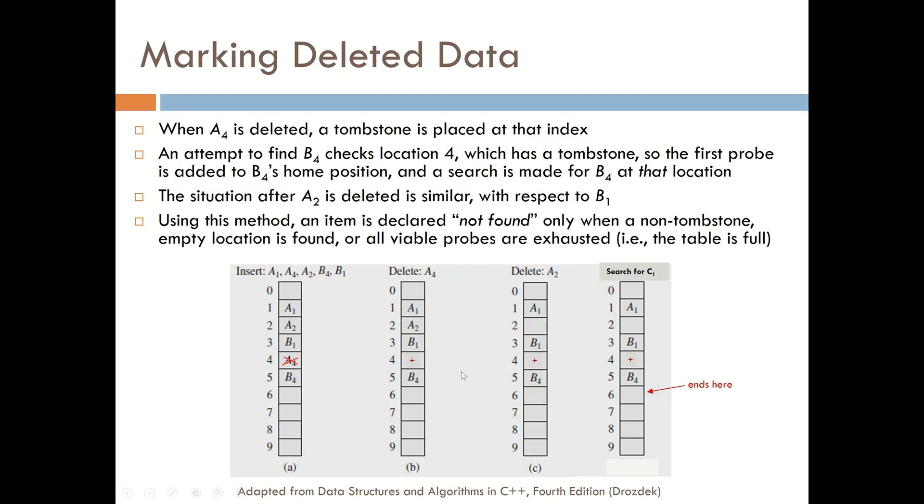The same issue can happen if we were to delete A2, for instance. If we were to remove A2, this would render it difficult to find B1 if we don't actually use a tombstone. So using a tombstone, we'll mark that location as having been previously occupied.